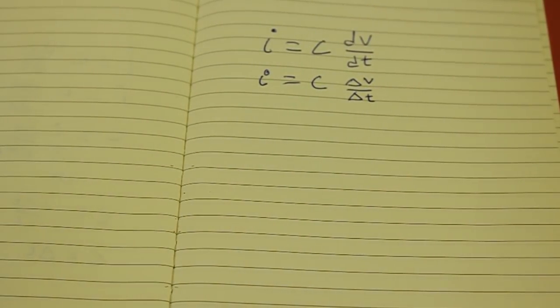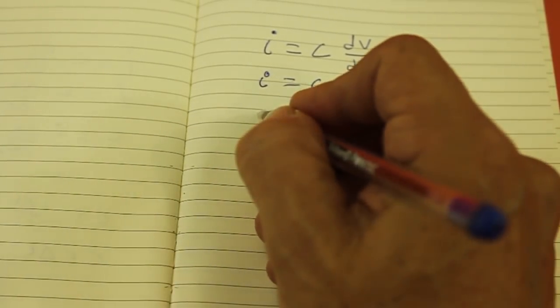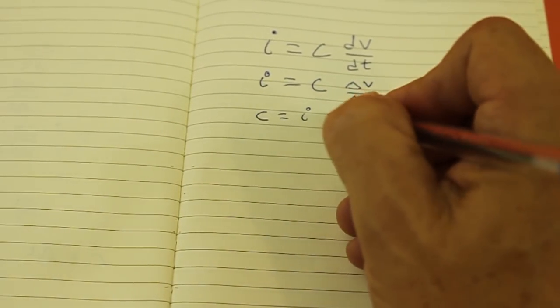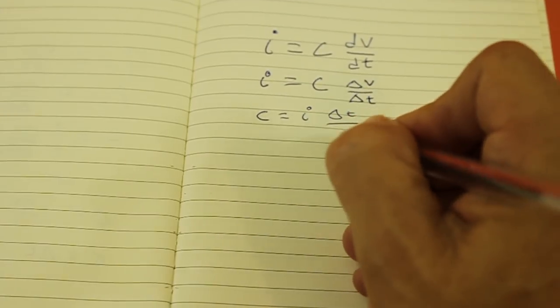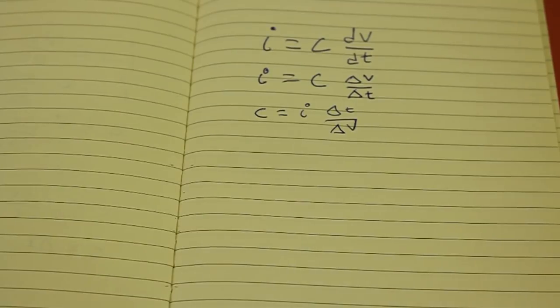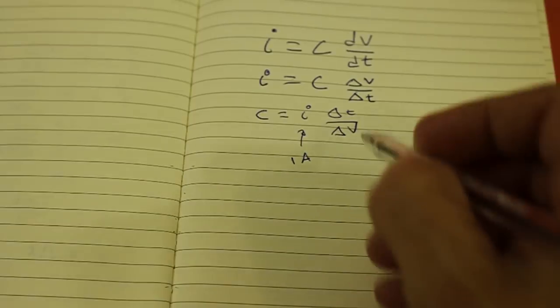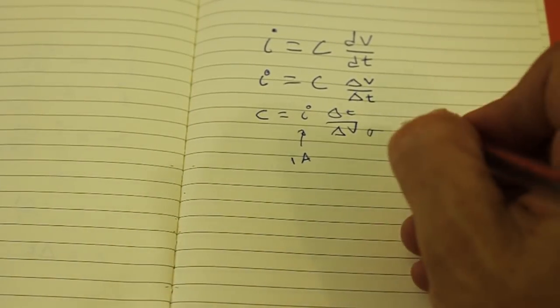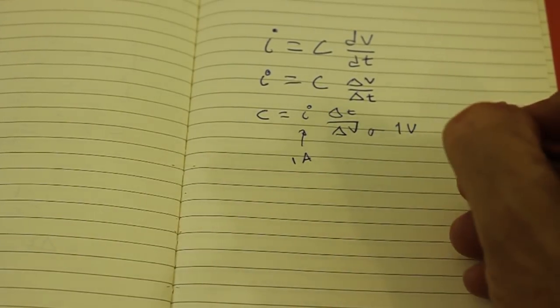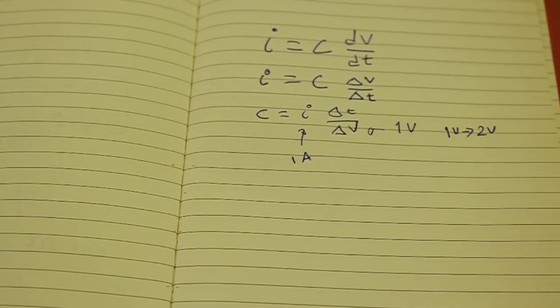So we can write this as capacitance equals current times time interval divided by voltage interval. Suppose now that we use a current of 1 amp and a voltage interval of 1 volt. For example, we can charge the capacitor from 1 volt to 2 volts. So the interval is 1 volt.